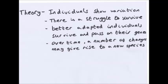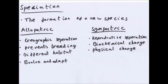Individuals show variation. There is a struggle to survive. Better adapted individuals survive and pass on their genes. And over time, a number of changes may give rise to a new species. And you can see how these link. Offspring generally appear similar to their parents: their genes have been passed on. No two individuals are identical: this shows variation. All organisms produce large numbers of offspring, which means there is a struggle to survive. And populations stay fairly stable in size because better adapted individuals survive and pass on their genes.